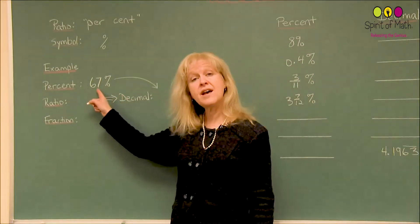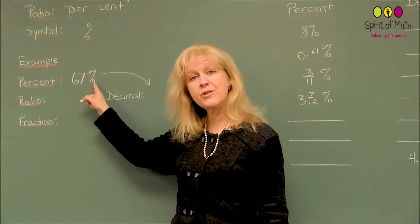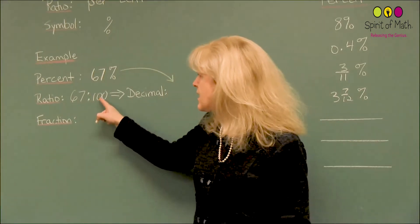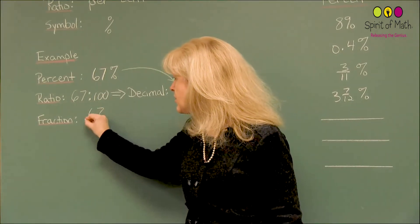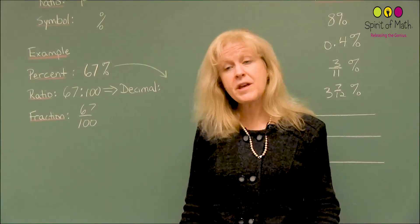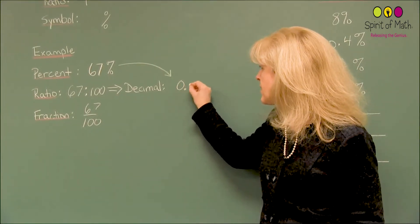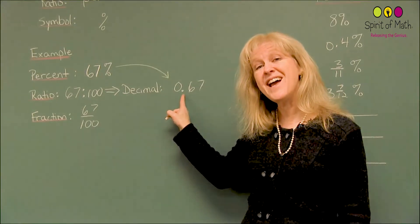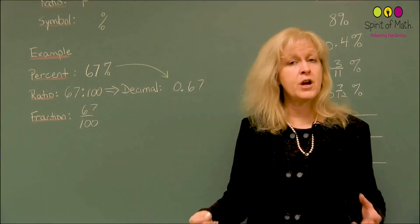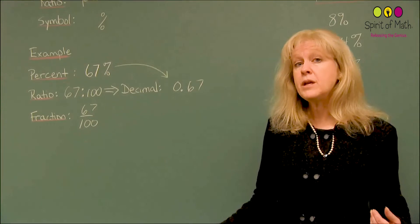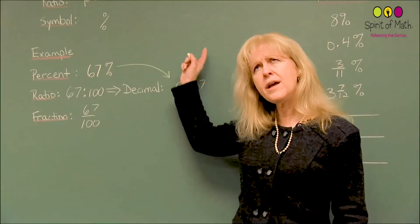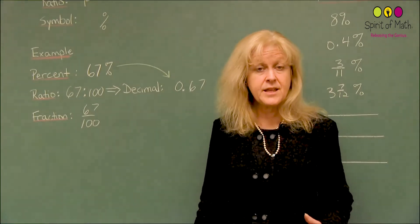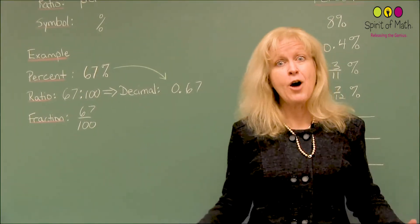Now let's look at an example of 67 percent. You know where those come from. So if you write that as a ratio, you've got 67 per 100. And if you write that as a fraction, you can just write it 67 divided by 100. As a decimal, 67 divided by 100 is 0.67. So 67 percent is 0.67 as a number. Once you convert it to a number, you can use it in your algebra and problem solving. You also need to know how to convert it back from a decimal or fraction to a percent so that it has meaning.